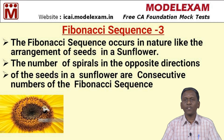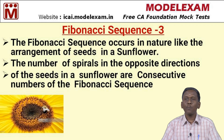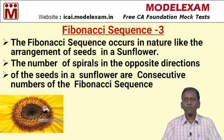The Fibonacci sequence can be seen in our day-to-day life. It occurs in nature, like the arrangement of seeds in a sunflower. The number of spirals in opposite directions in a sunflower are consecutive numbers of the Fibonacci sequence. You can see the diagram.